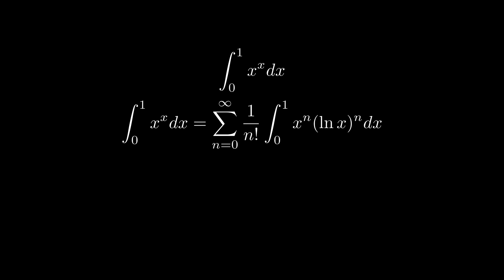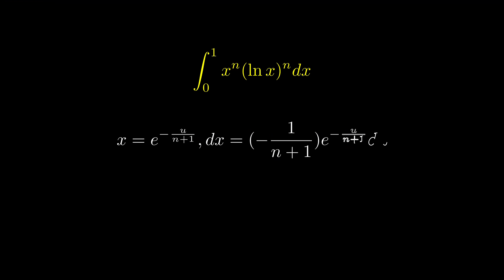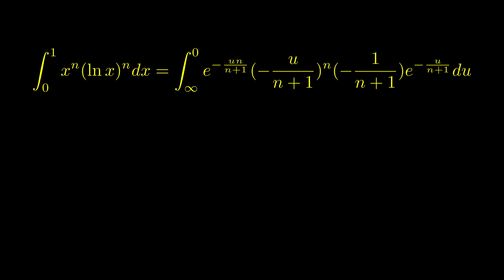Now we have to calculate this integral in yellow. x to the power of n log x to the power of n integrated from 0 to 1. After a few trial and error, we will see that the best u substitution is to set x equals e to the power of negative u over n plus 1.